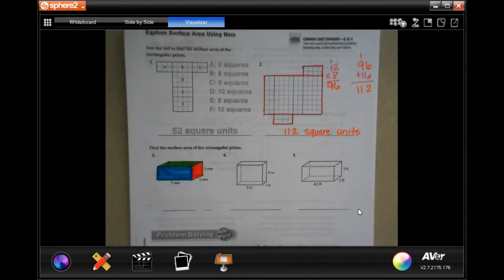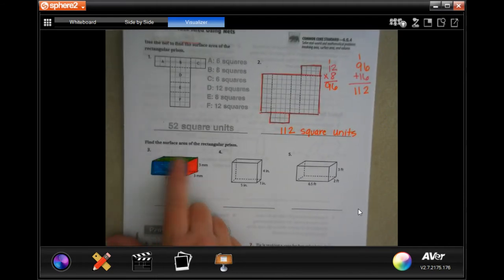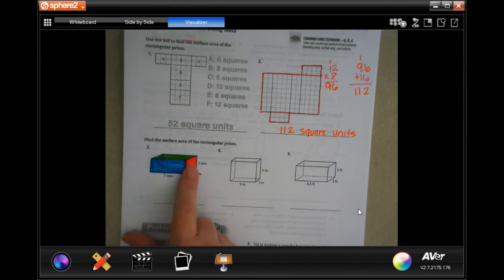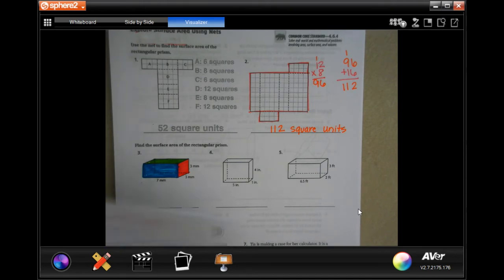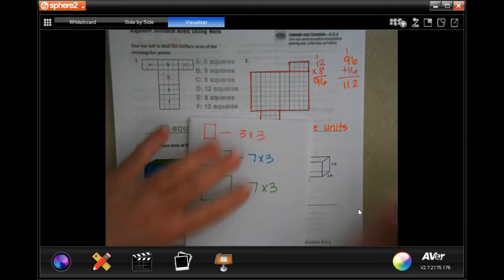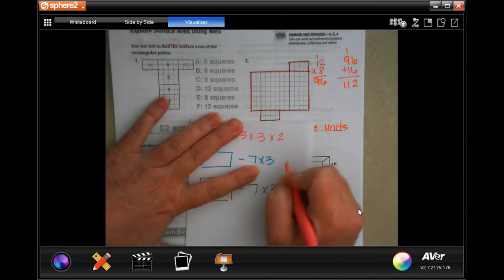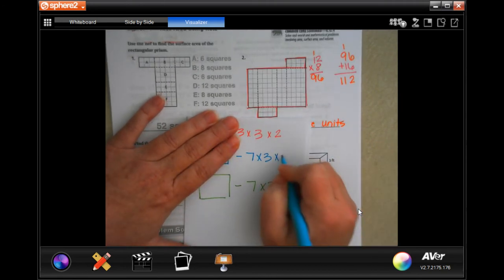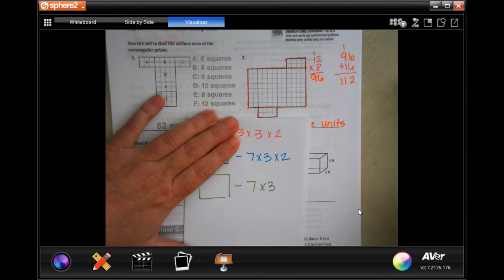So you'll see that on number two, I colored in the different sizes. Now, what you need to know is that each one of those colors has two of them. So there are two of the blues, two of the greens, and two of the pinks, or what looks like orange on there. So I did these, but what we need to do to each one of them is also add on a times two, because there's two of each one of them.